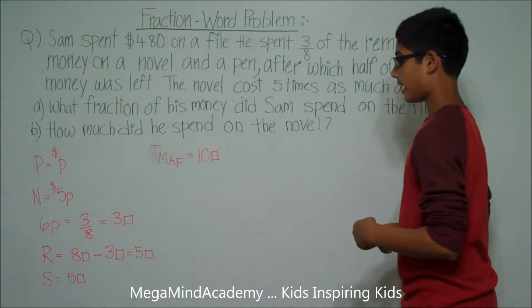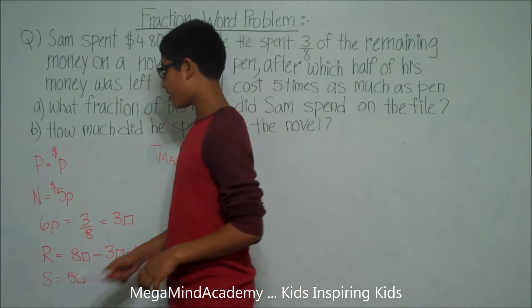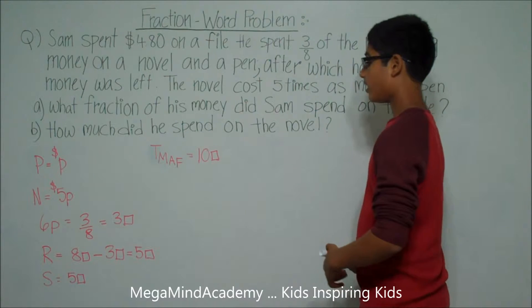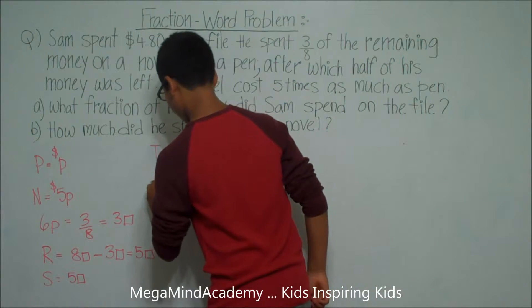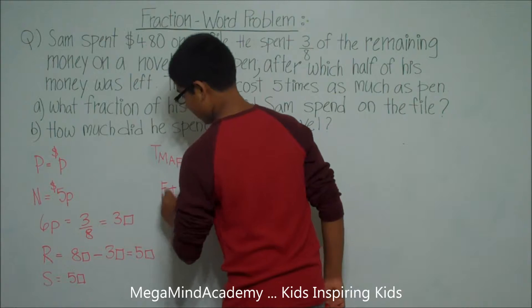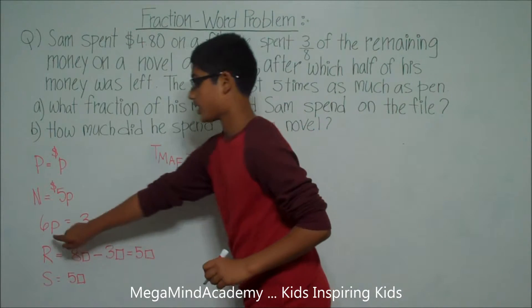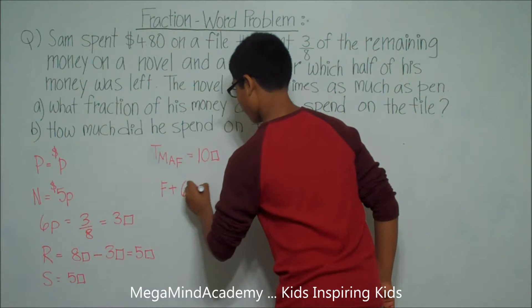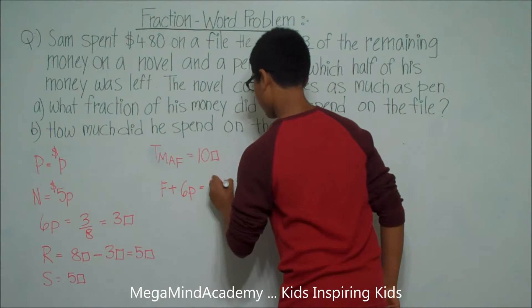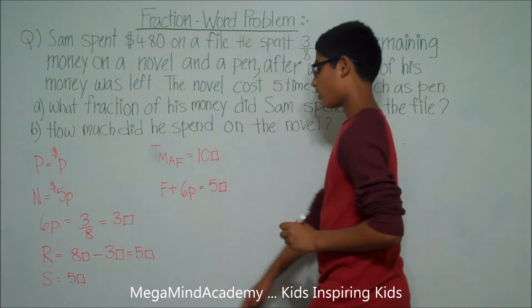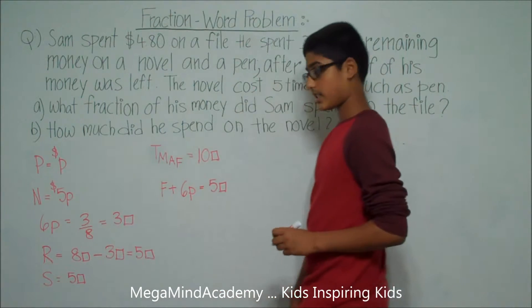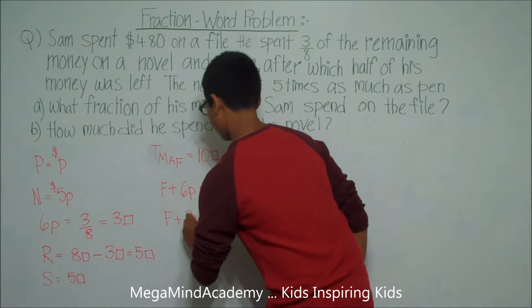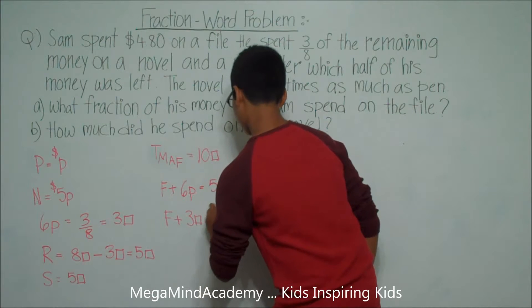We know that he spent five units, and he bought a file, a novel, and a pen. So this means that the file plus the novel plus the pen, which is 6P, is equal to five units. We also know that 6P is equal to three units. So the file plus three units equals five units.